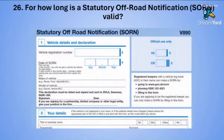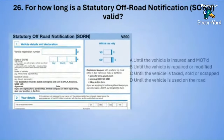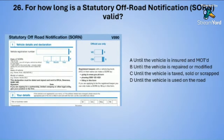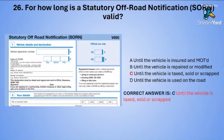Question twenty-six: For how long is a SORN (Statutory Off Road Notification) valid? A: until the vehicle is insured and MOT'd. B: until the vehicle is repaired or modified. C: until the vehicle is taxed, sold or scrapped. Or D: until the vehicle is used on the road. The correct answer is C — until the vehicle is taxed, sold or scrapped.